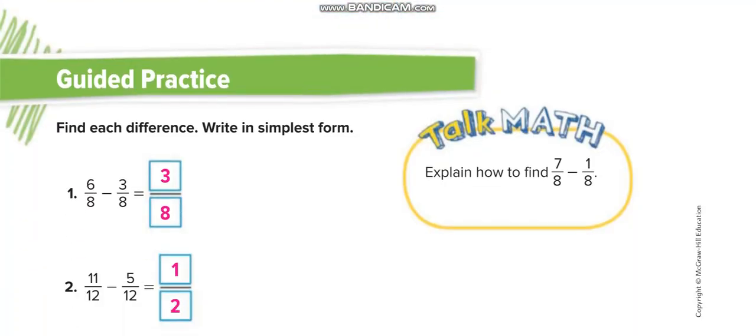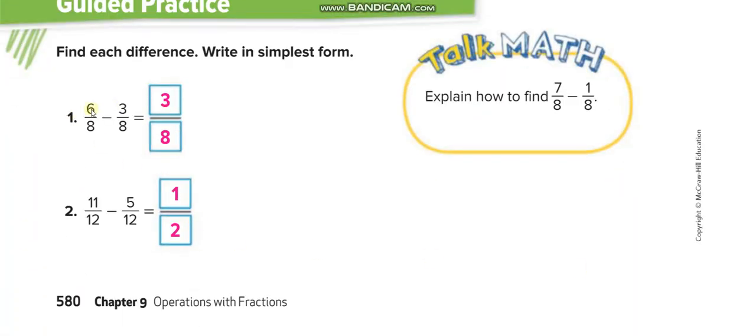Here in guided practice 6 minus 3 equals 3 over 8. We can't find a number with which we can divide the same number up and down, so we cannot simplify this. This is already the simplest form. 11 minus 5 is equal to 6 over 12.